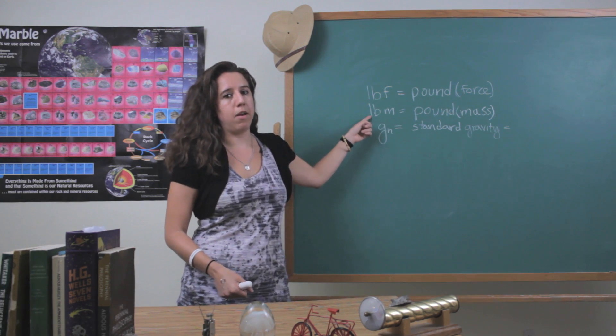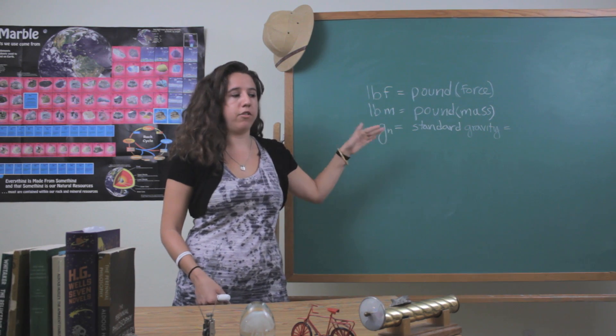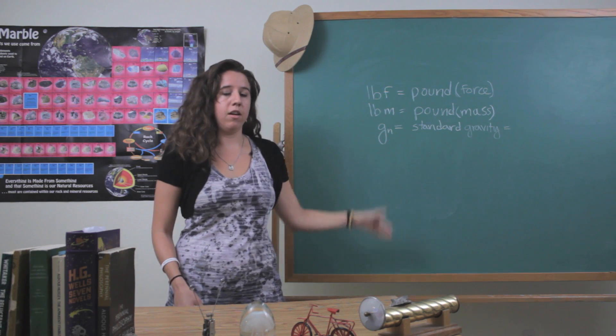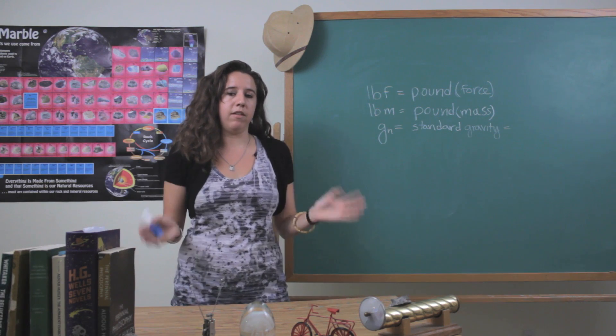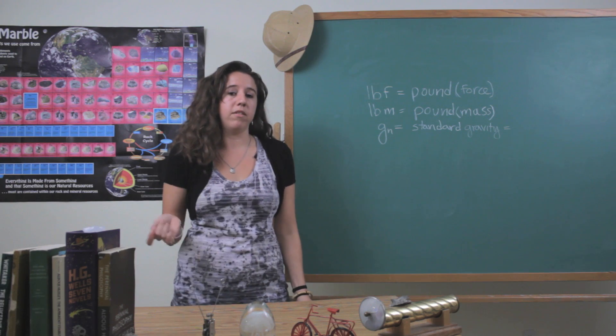So pound force, pound mass, and this is standard gravity. So this is just an average value of gravity that can be used all over the Earth's surface and it's averaged over the slightly different values that you find at different places on the Earth.